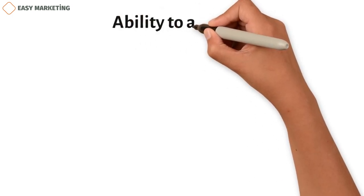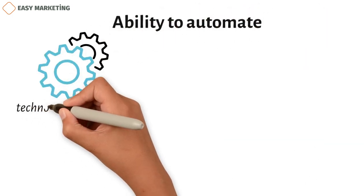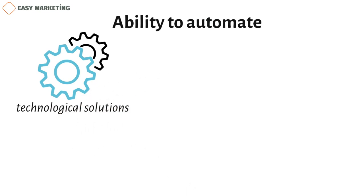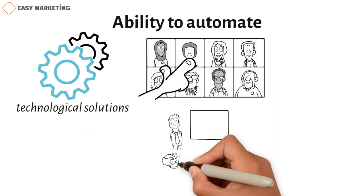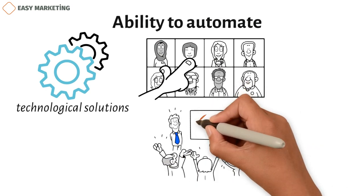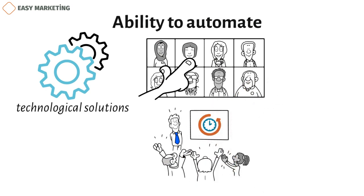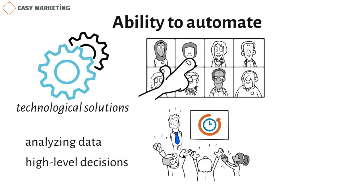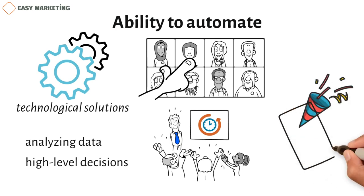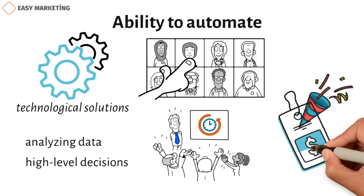Ability to automate: in dynamic marketing strategies, automated technological solutions that look at how customers act and change the marketing content they get are often used. Your marketing team can use the time saved by this level of automation to do more important tasks, like analyzing data and making high-level decisions about marketing strategy. For example, you can set up an automated system to send birthday discounts to customers who usually take advantage of them.